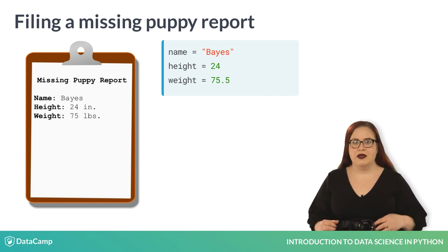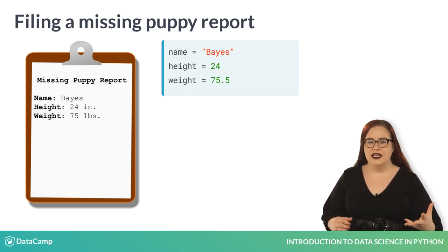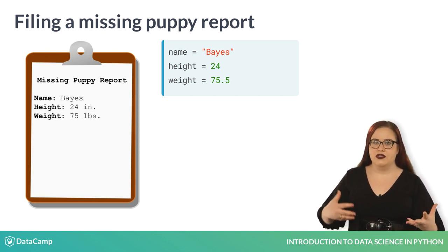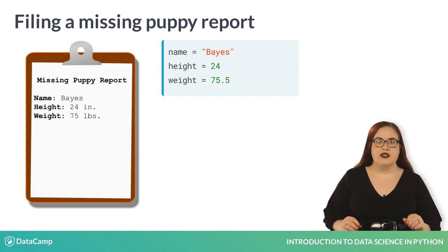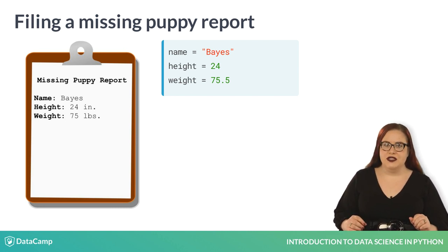Another variable is height, and its value is 24. We define variables using an equals sign.